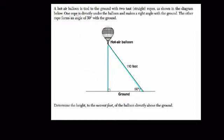They tell you one rope is tied directly under the balloon and makes a right angle with the ground. So here's your ground, so the rope we're talking about is making this right angle here. And the other forms a 50 degree angle with the ground, so that's this angle right here.